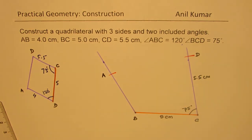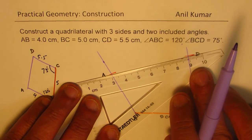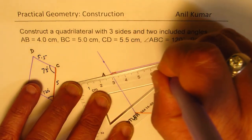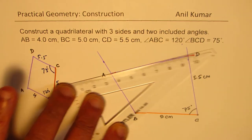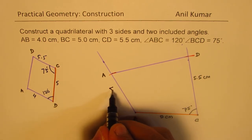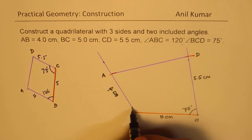Joining A to D completes the quadrilateral. We'll label A to B as 4 centimeters and this angle here as 120 degrees.